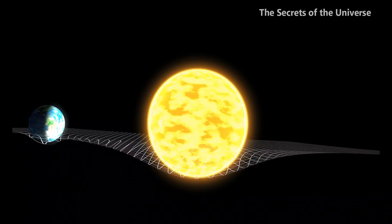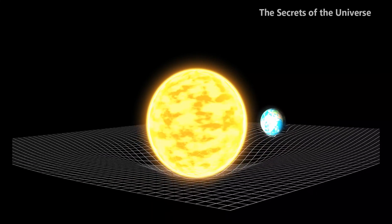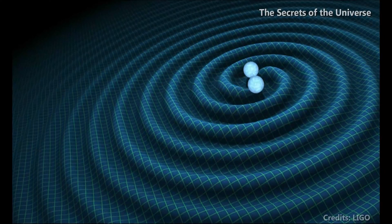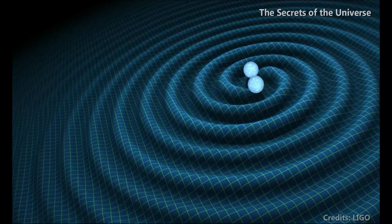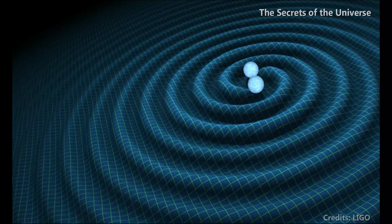Basically, Albert Einstein assumed that mass distorts space and time as shown. Heavier the mass, more is the distortion. As the mass accelerates, the ripples in spacetime propagate outwards at the speed of light and these waves are known as the gravitational waves.